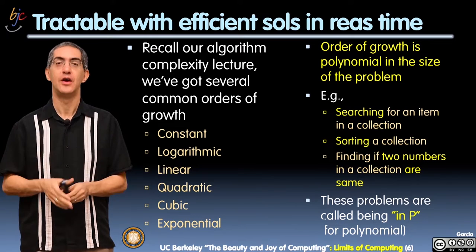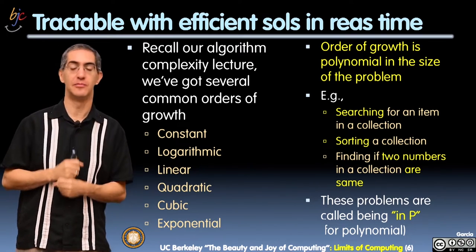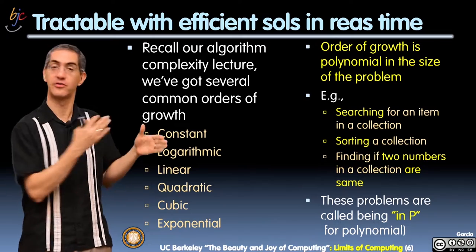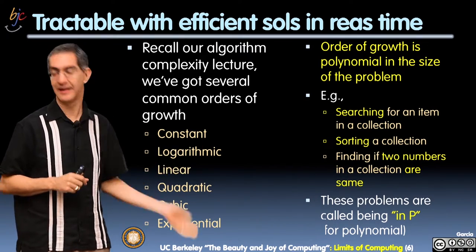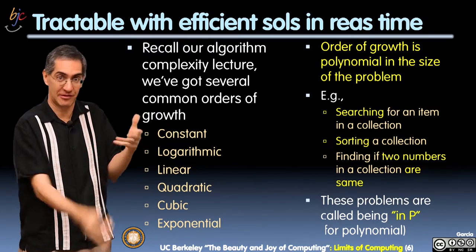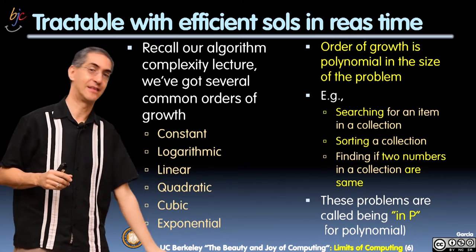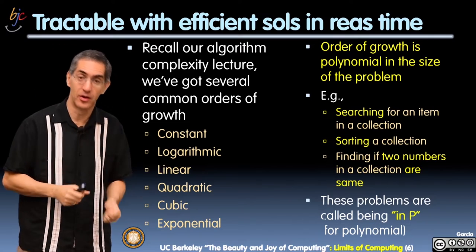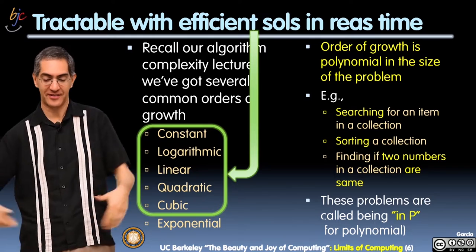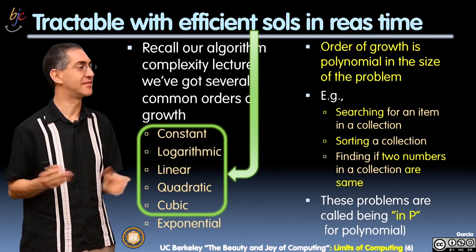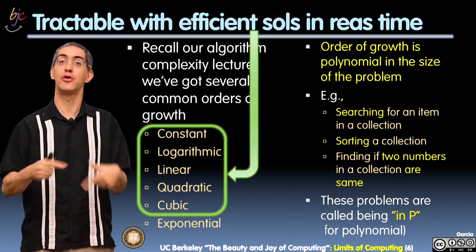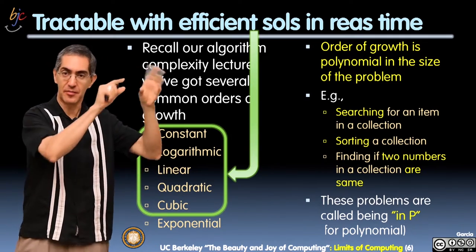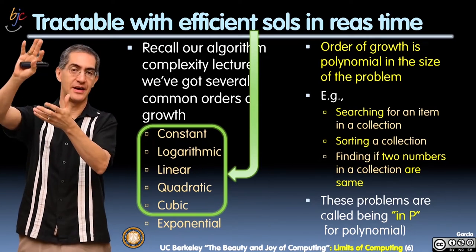The easiest case: tractable with efficient solutions in reasonable time. We've seen these orders of growth — the soft categorization of the orders of growth of algorithms. Here are six: constant, logarithmic, linear, quadratic, cubic, and at the slowest end, exponential. Those that are tractable with efficient solutions in reasonable time are everything but exponential on this list. The order of growth is polynomial — some coefficient times x to the k.